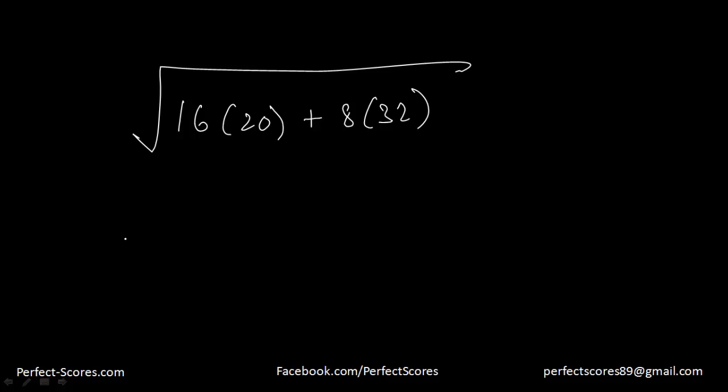So if I have to calculate this, let me take 16 common from both of them. If I take 16 common from here, 20 will come here. I'll take 8 out from here. I'll take 16 out of here. Only 2 will remain. That means 16 will come here.